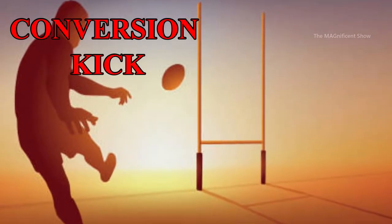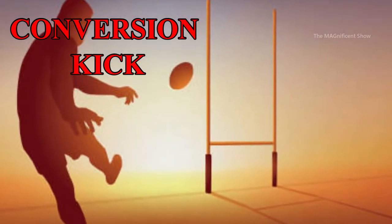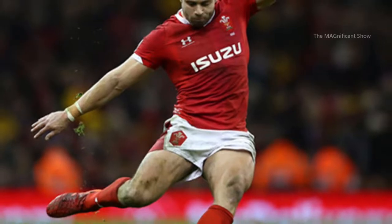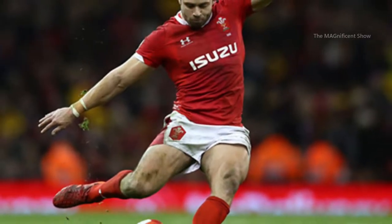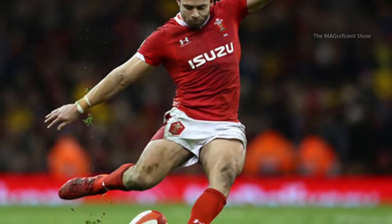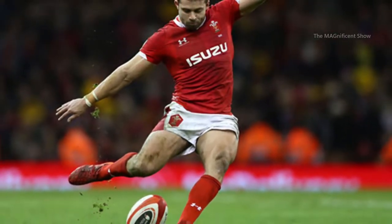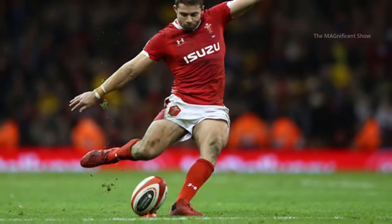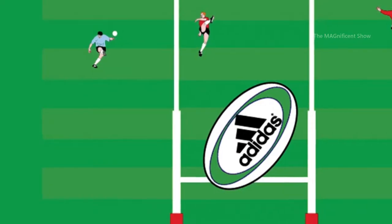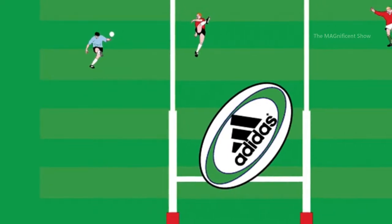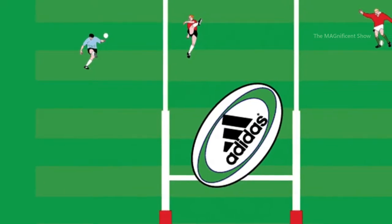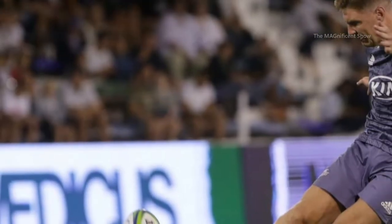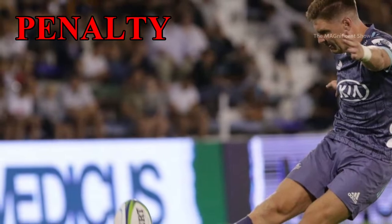The second scoring method is called a conversion kick. After scoring a try, a team is given a chance to take a conversion kick. The kick is made from 20 meters from the goal line, perpendicular to the spot where the try was scored. Kicking the ball between the posts and over the crossbar brings two more points to the same team.